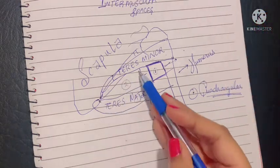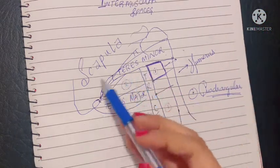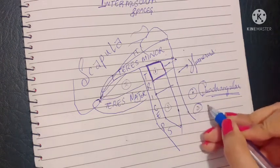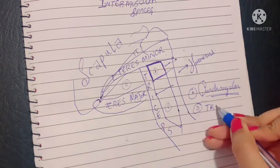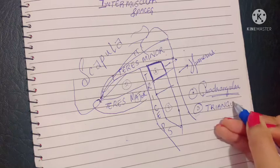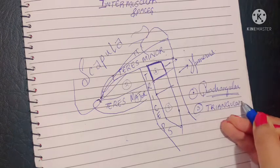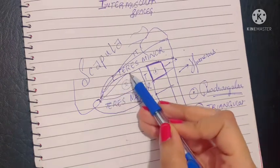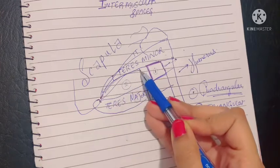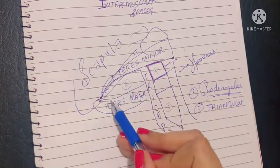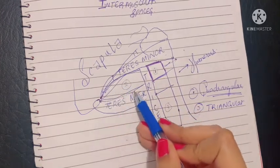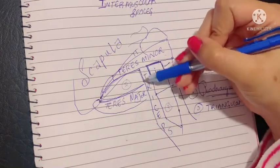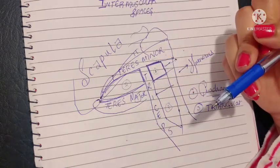Moving on to the upper triangular space — since it's triangular, it has three boundaries. The upper boundary superiorly is the lower border of teres minor. The lower boundary inferiorly is the upper border of teres major. And laterally is the medial head of the triceps.